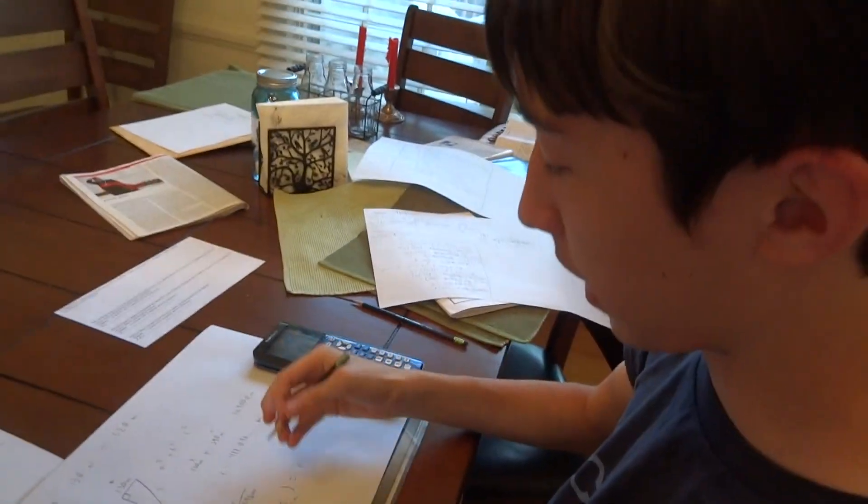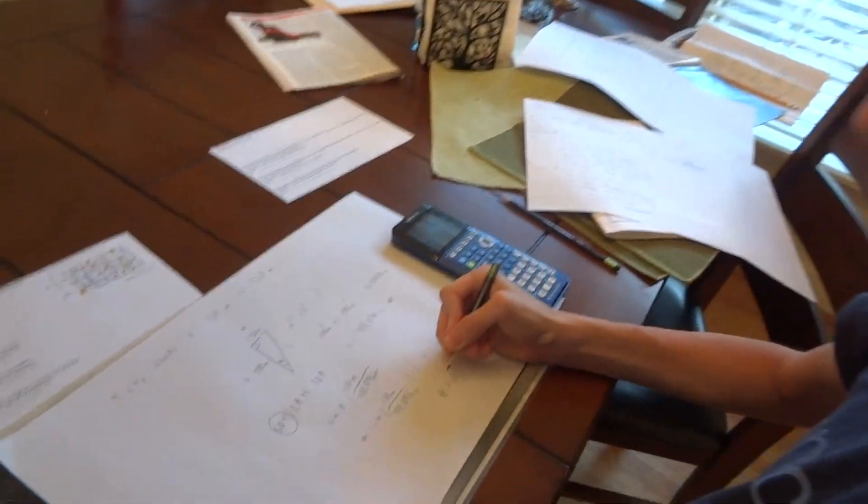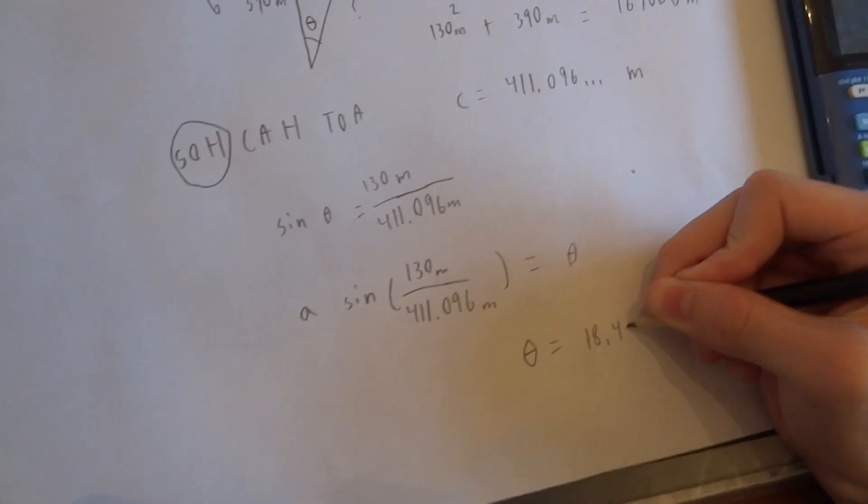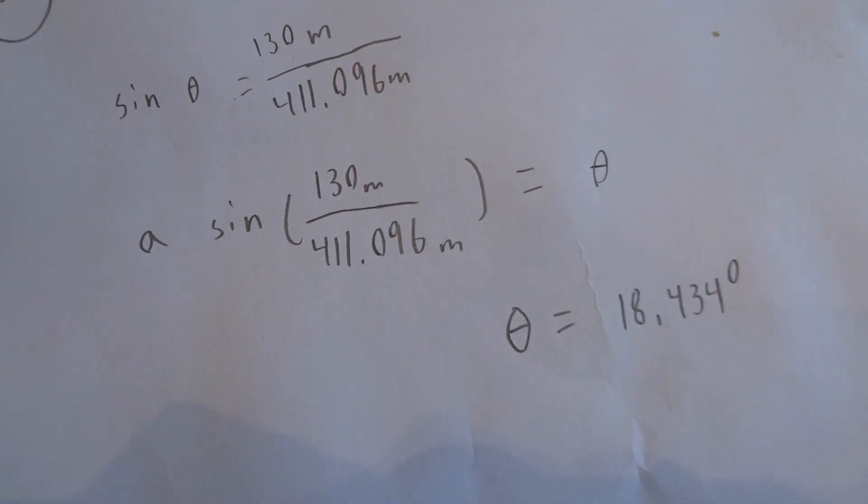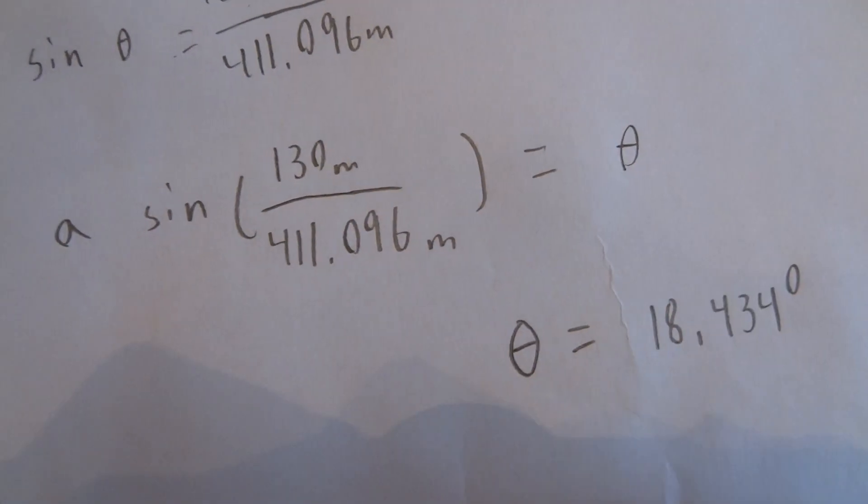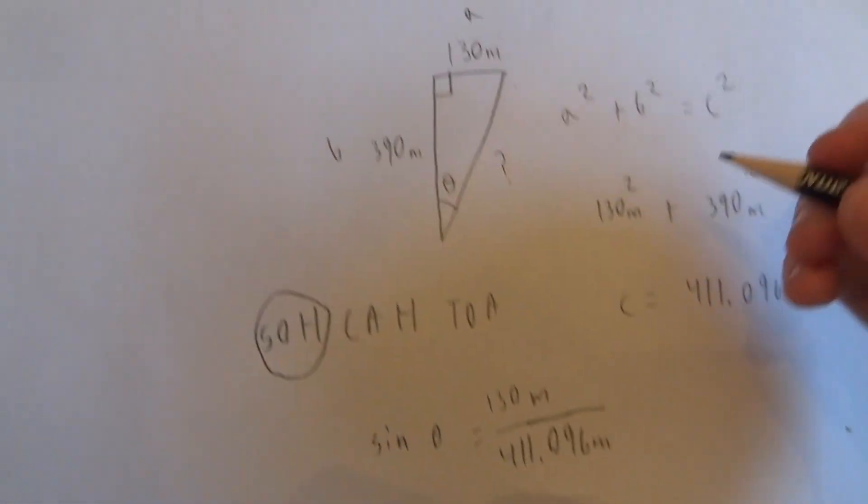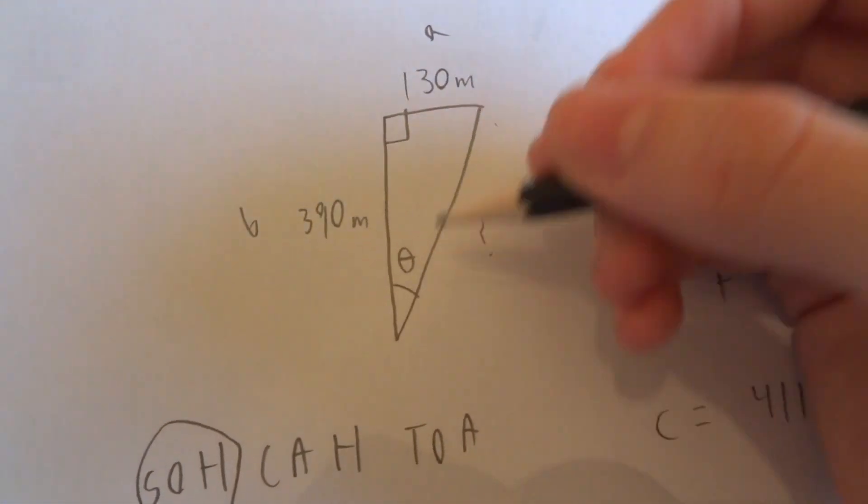And then we get theta equals 18.434 degrees for the angle measured east of north because of the way the triangle is oriented.